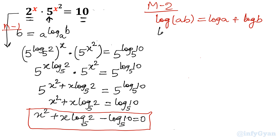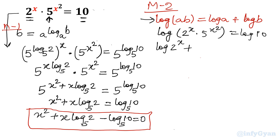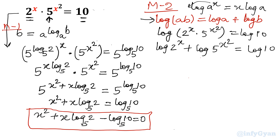I will write log of (2 power x times 5 power x squared) is equal to log of 10. Applying the log of a product property: log of 2 power x plus log of 5 power x squared equals log of 10. Now applying the second property — log of a power x brings x to the multiplier: x log 2 plus x squared log 5 is equal to log 10.